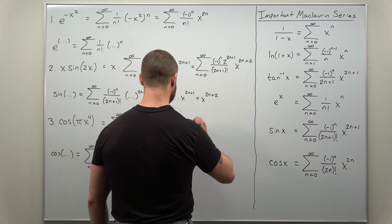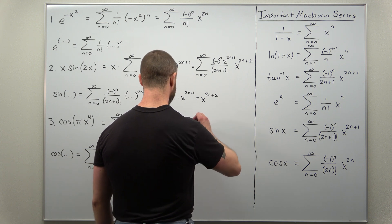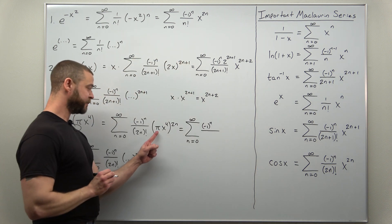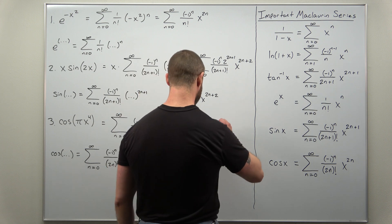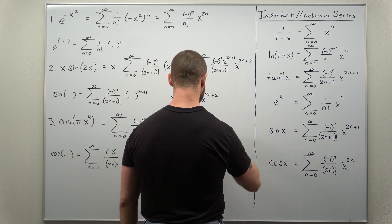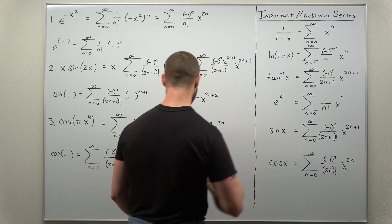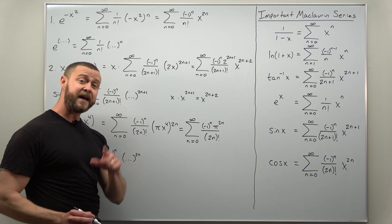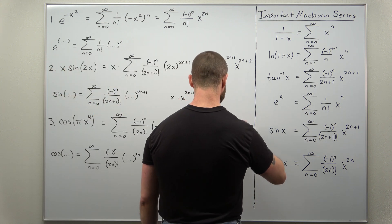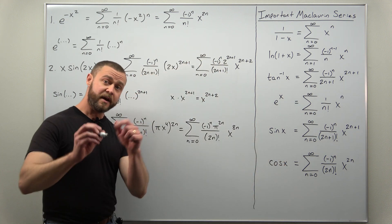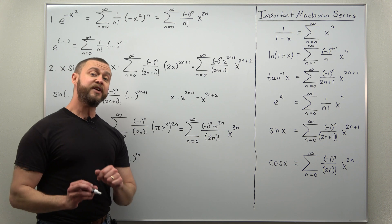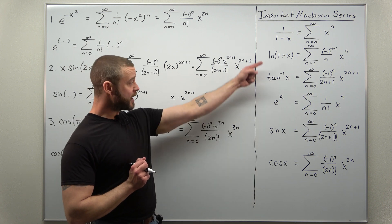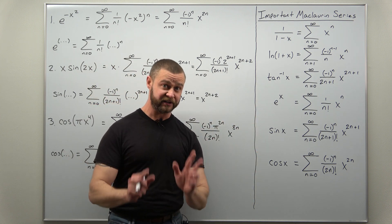We can rewrite this as the sum going from n equals 0 to infinity of negative 1 to the n times pi to the 2n power, divided by 2n factorial. Be careful to multiply 2n times 4 — that gives x to the 8n power. There is our Maclaurin series for cosine of pi x to the fourth. All these problems were very straightforward by making algebraic replacements in existing Maclaurin series for basic functions.